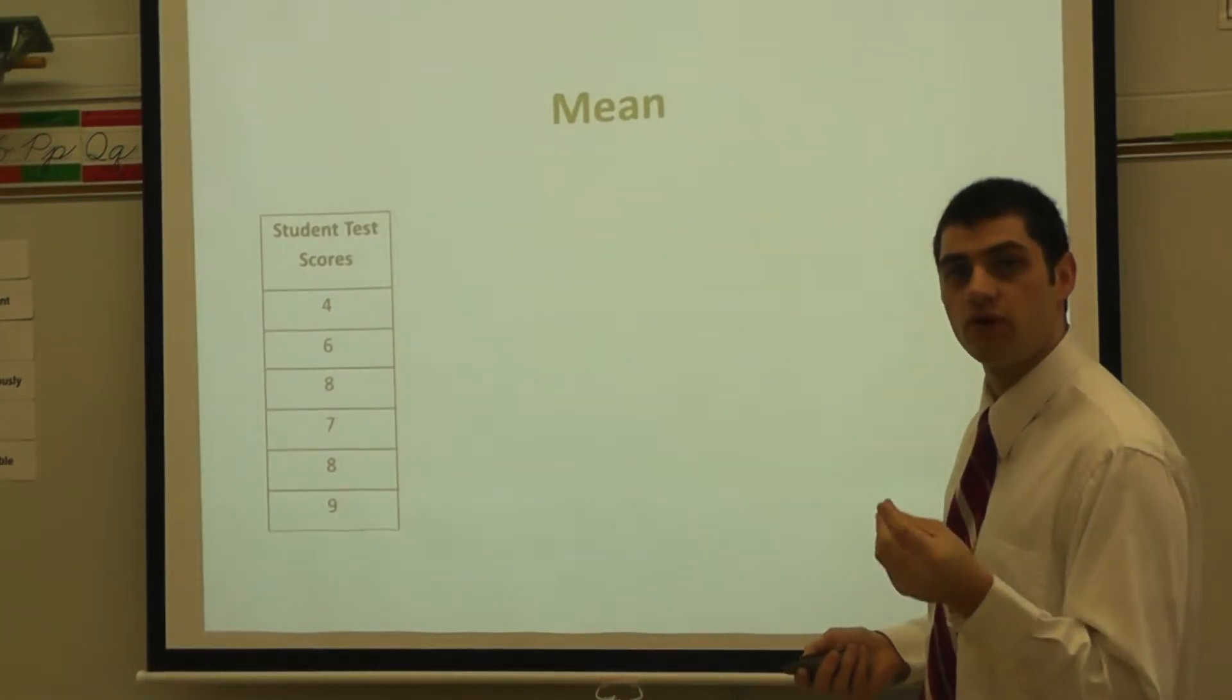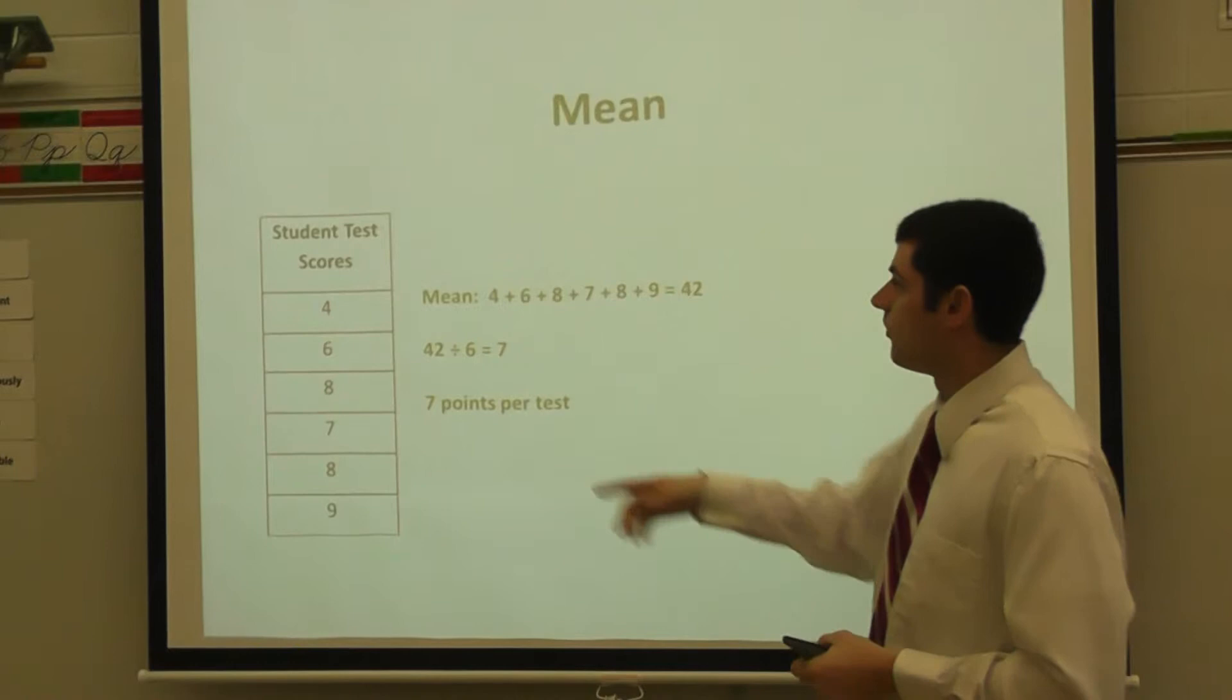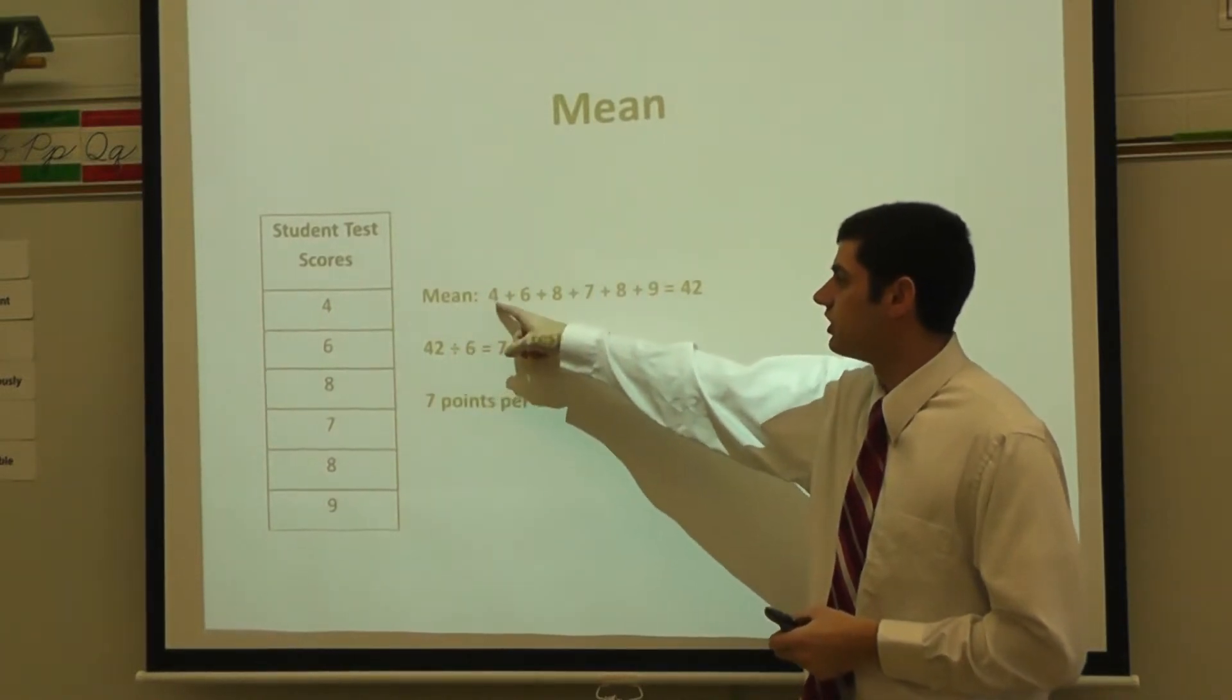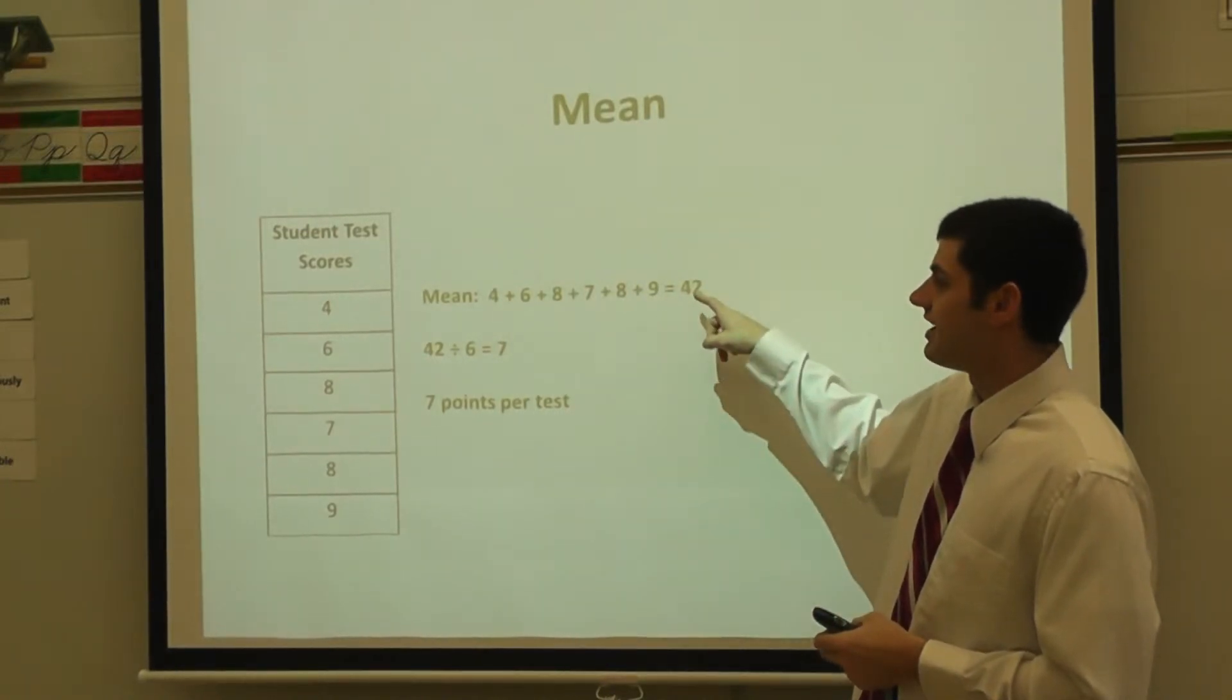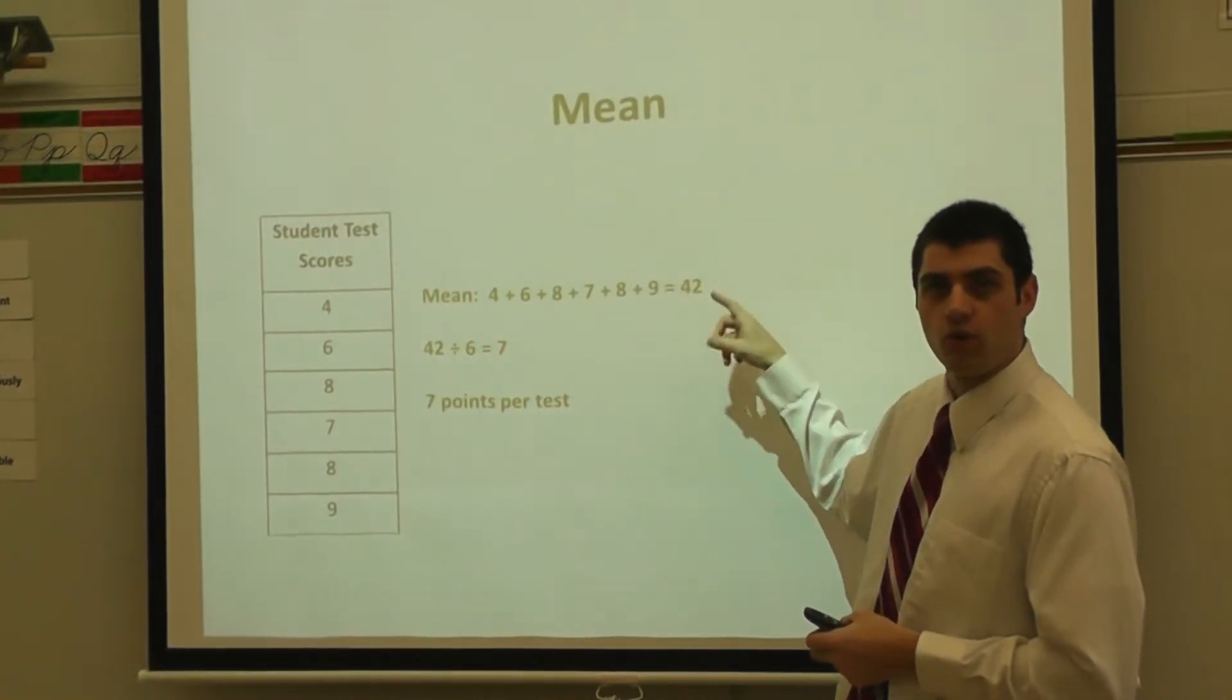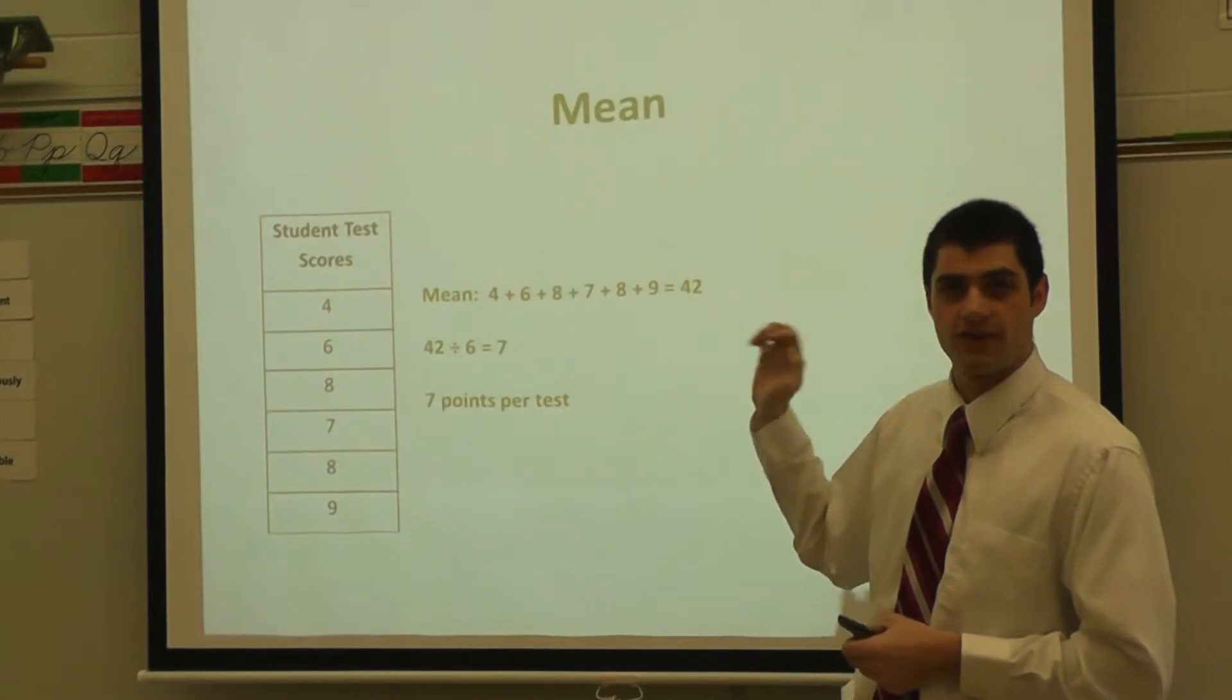So I'm going to total up the number of points I've earned. When looking at it I'm just going to add the scores. So if I added 4 plus 6 plus 8 plus 7 plus 8 plus 9, that would equal 42. 42 stands for the number of points I've earned on the tests.